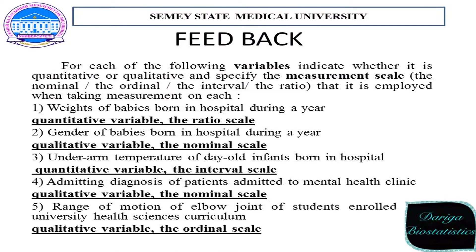Feedback: for each of the following variables, indicate whether it is quantitative or qualitative and specify the measurement scale – nominal, ordinal, interval, or ratio. First: weight of babies born in hospital during a year – it is a quantitative variable on the ratio scale. Under-arm temperature of infants born in hospital – quantitative variable, interval scale. Admitting diagnosis of patients admitted to a mental health clinic – qualitative variable, nominal scale. Range of motion of the elbow joint of students enrolled in a university health sciences curriculum – qualitative variable, ordinal scale.